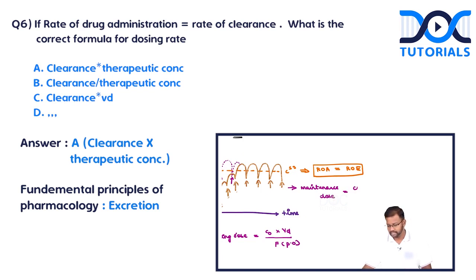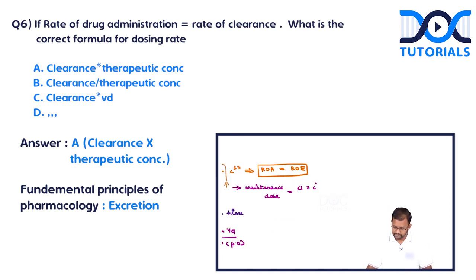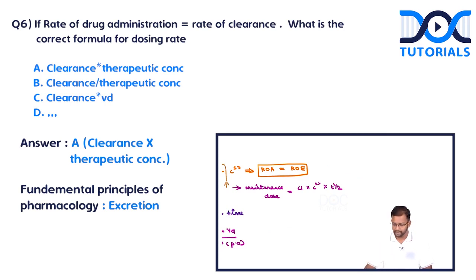Maintenance dose is calculated as clearance multiplied by steady-state concentration multiplied by t½. Again, if the drug is given by the oral route, we divide the value by the oral bioavailability, because bioavailability is the limiting factor.